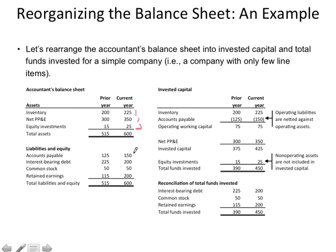Accounts payable — we owe a supplier in 30 to 45 days with no interest — that's an operating liability, a one. Interest-bearing debt is a three — you owe 30 days of interest. Common stock at par value is equity, a four. Retained earnings is also a four — it's income we made that we're reusing instead of paying as dividends, so it's like new equity investment by shareholders.